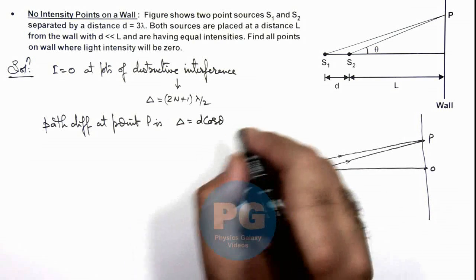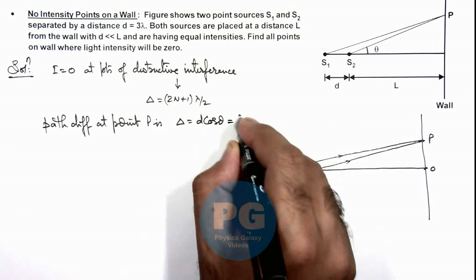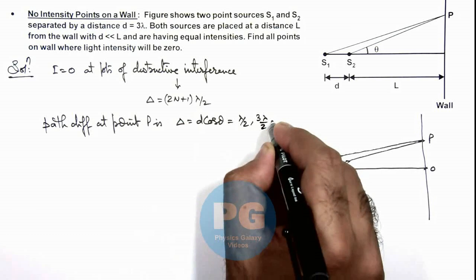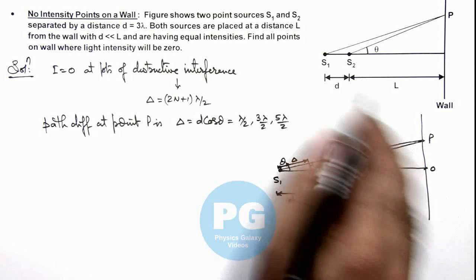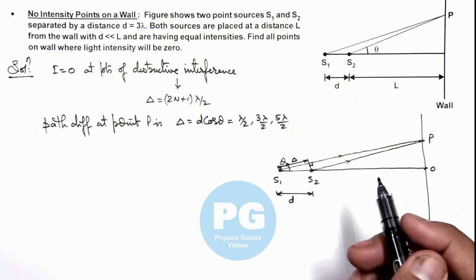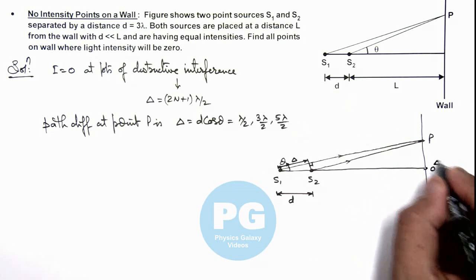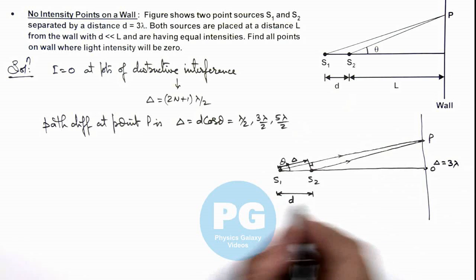All the points can be considered as d cos θ equals λ/2, 3λ/2, and 5λ/2, because when this angle theta becomes 90 degrees, path difference will become zero. At point O we can see the path difference is 3λ, as we are given that d is 3λ.